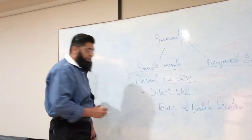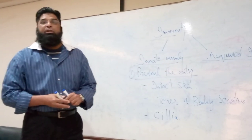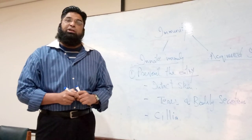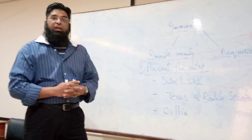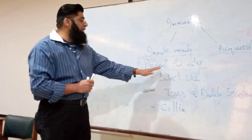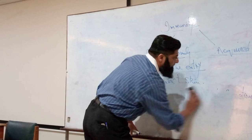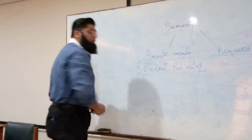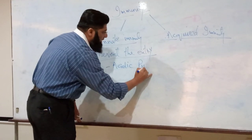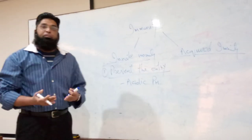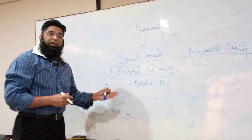The third component is cilia — hair-like structures present in our upper respiratory tract, visible at the external nares. These respiratory cilia prevent the entry of microorganisms. Other factors include acidic pH — the acidic pH of the stomach and the acidic pH of the vagina — which prevent the entry of microorganisms.